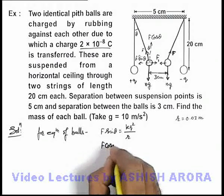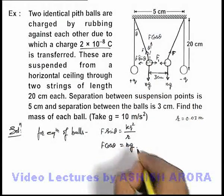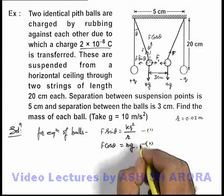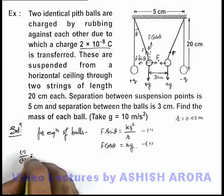For equilibrium of forces in the vertical direction, F cos theta must equal mg. If these are equations 1 and 2, then we can divide these two equations, 1 by 2.